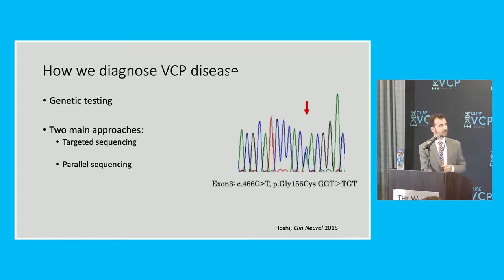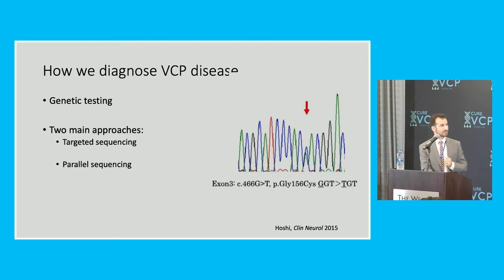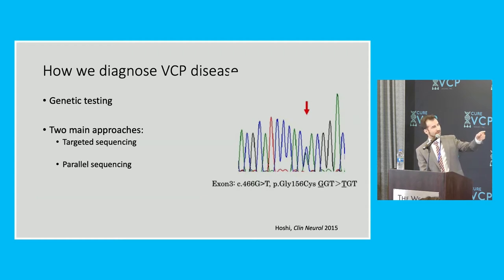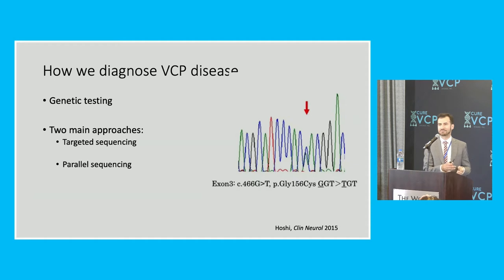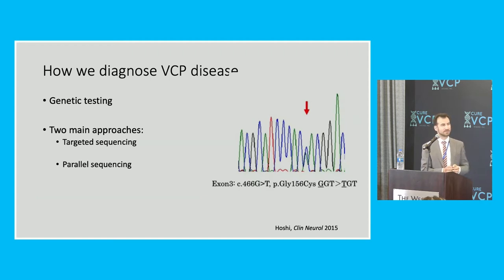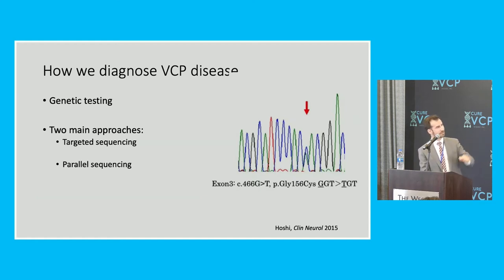At the right, I've shown a picture of what a sequencing chromatograph looks like for targeted testing. This is from a paper about a particular mutation in VCP at position 156. You can see there's a red arrow with a double bump showing that there are two different sequences at that position — one is the expected variant and the other is the mutation. Of course we all have genetic variants in us, but that little double bump is just an illustration of what you'd see.